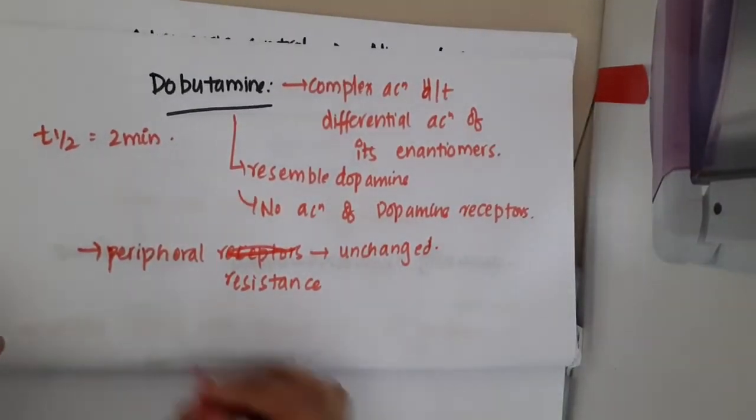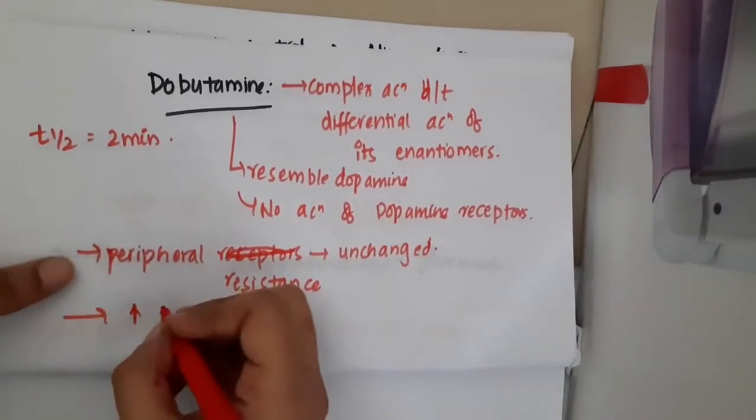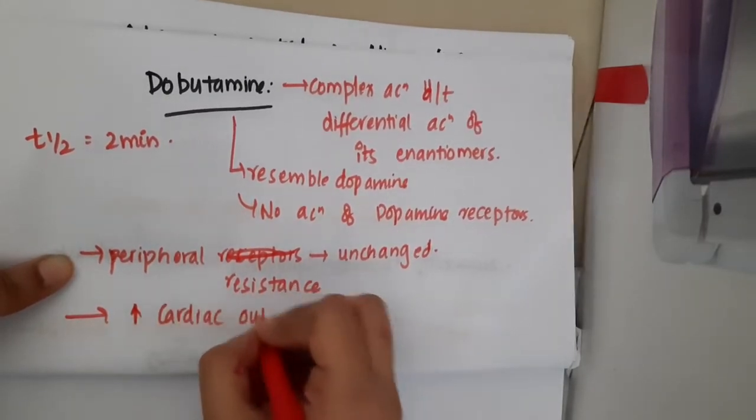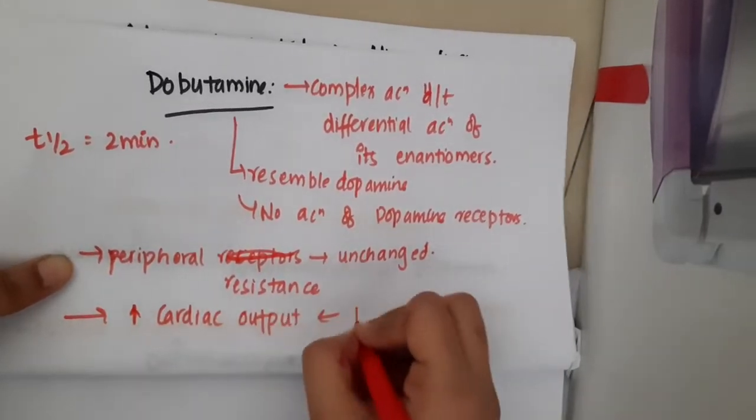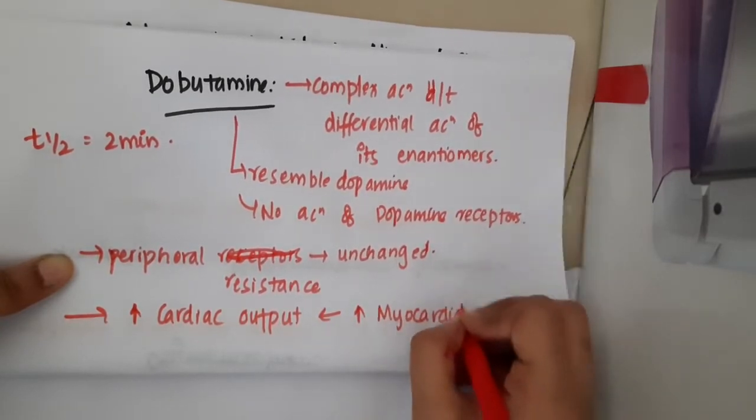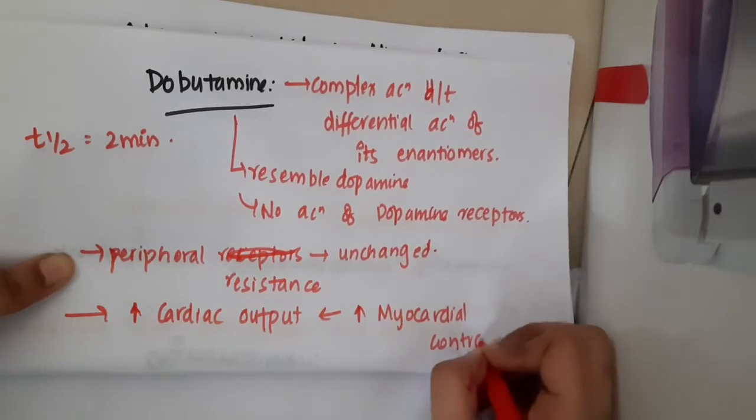But what is changed? Dobutamine increases cardiac output. How? By increasing myocardial contractility.